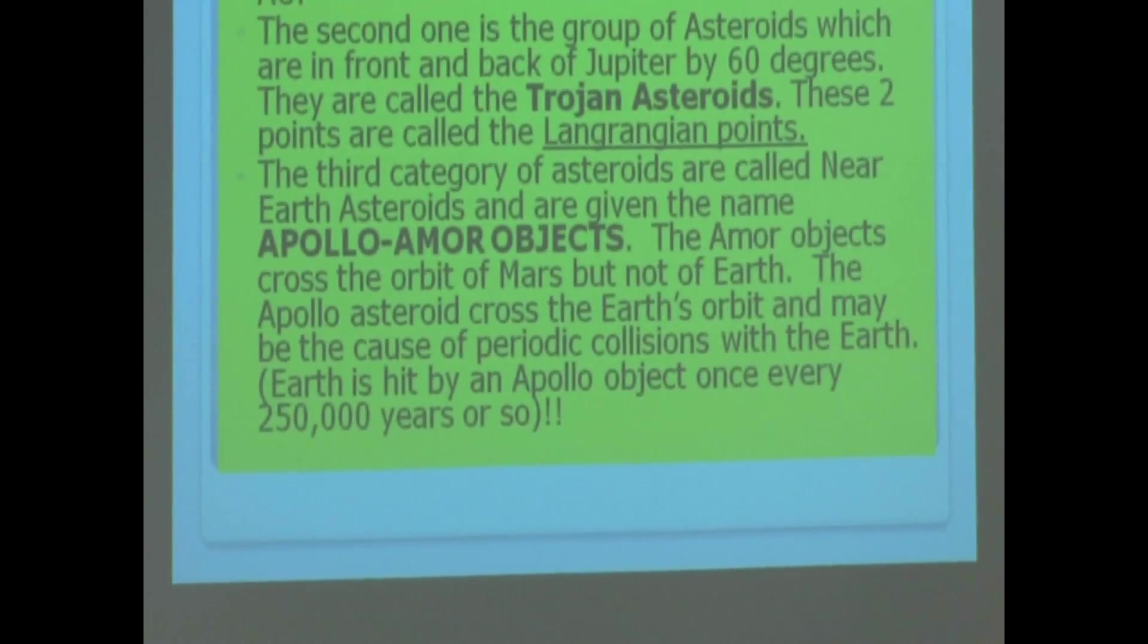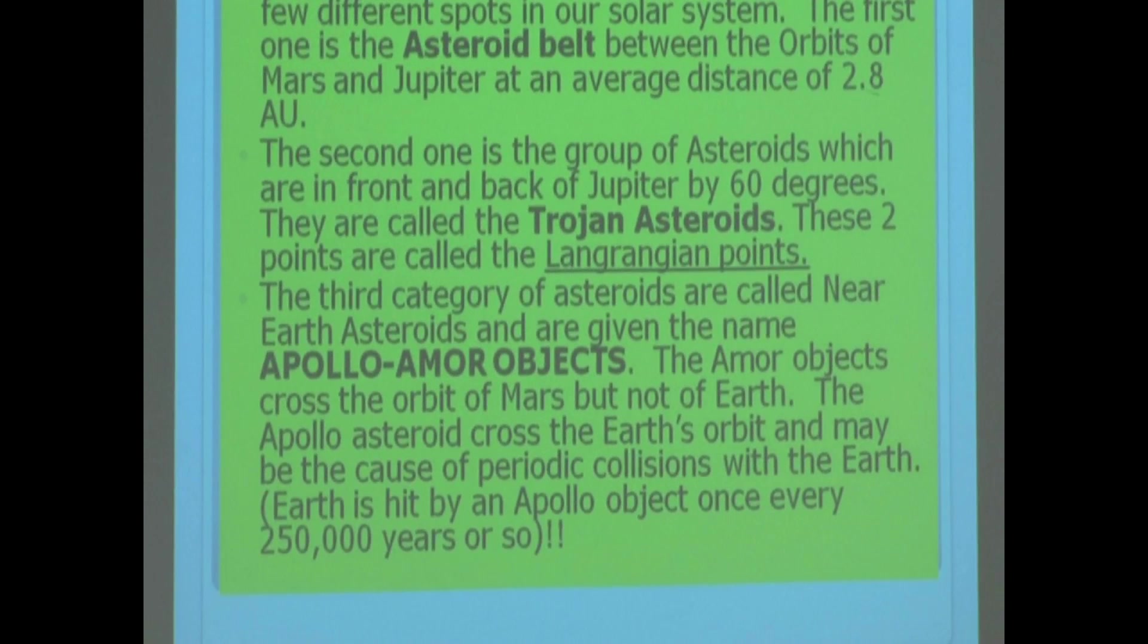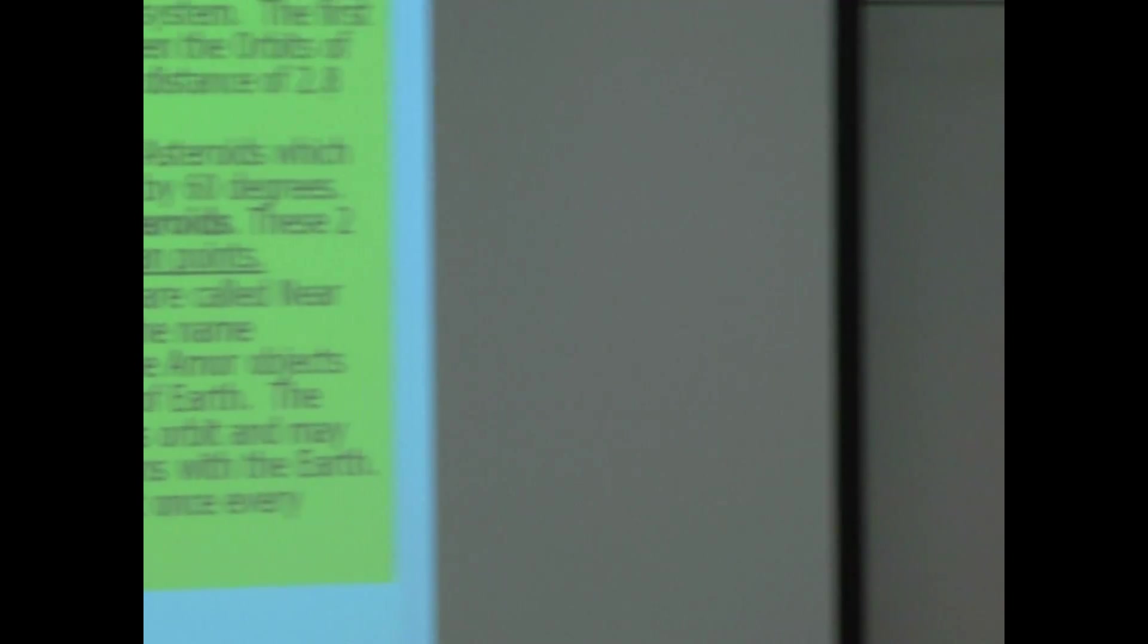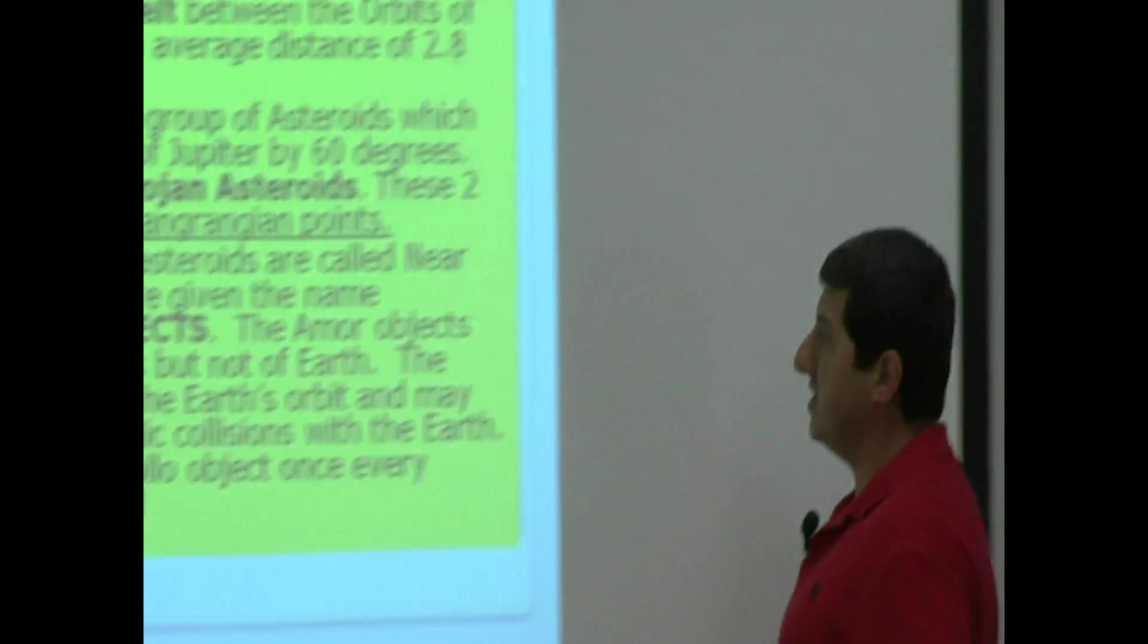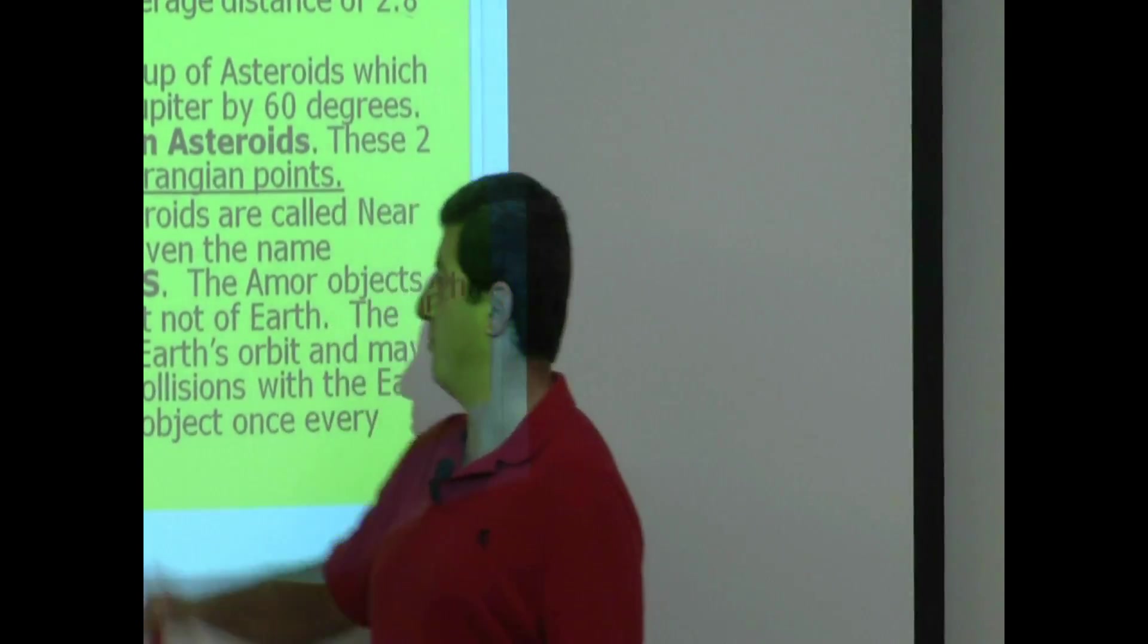The third category of asteroids are called near-Earth asteroids. The orbit of near-Earth asteroids would be more like, they're going like this, you know, all kinds of crazy orbits. And so, the asteroid belt asteroids are just going around the sun, but the near-Earth asteroids, they're going like this.